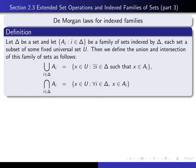Let's recall once again the working definitions of unions and intersections of indexed families. If we have an indexed family of sets a sub i, where i varies over some indexing set delta, then the union of all of the sets in the family is the set of all x in the universe such that there exists an i in the indexing set such that x is in a sub i.